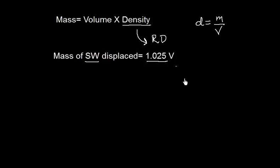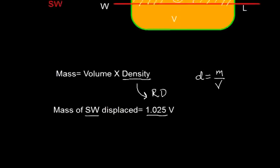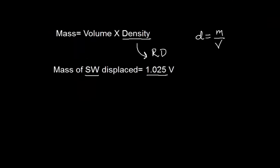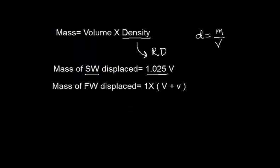Similarly, when the vessel is in freshwater, the volume increases to small v plus capital V. The total underwater volume in freshwater is capital V plus small v. So the mass of freshwater displaced is the relative density of freshwater, which is 1, multiplied by capital V plus small v.